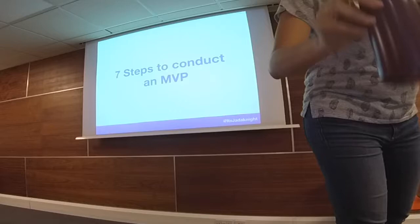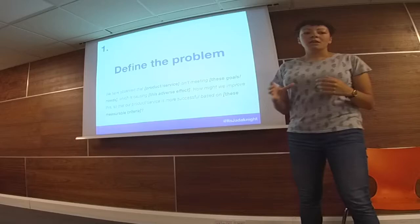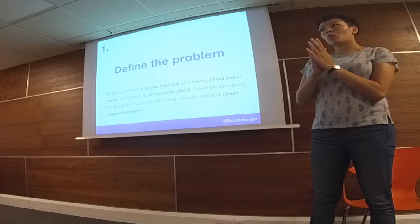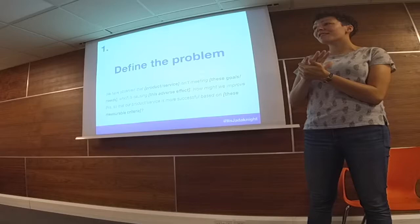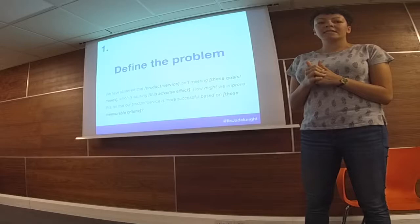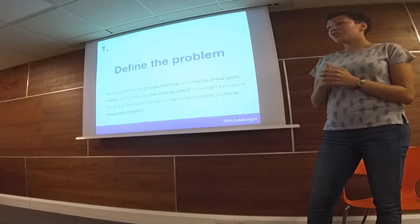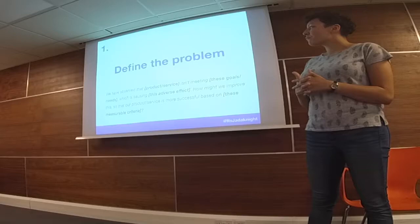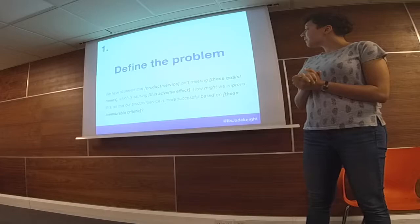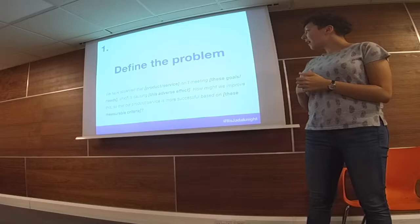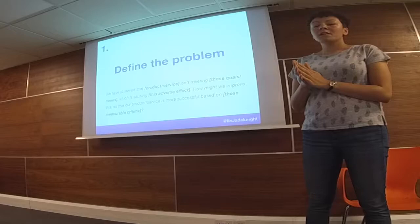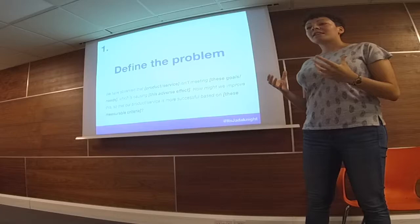Step one is really simple: define the problem. It's the most important step at the beginning of any project or MVP. You want to understand what the problem is you're trying to solve, why it is a problem, have you tried to tackle this before and it didn't work, and what has sparked this whole process in the first place. It could be something like your customers aren't staying with you — you're losing retention and you're not sure why. At this stage it's really good to write a problem statement. Here's a small template: 'We've observed that this product or service isn't meeting these goals or needs, which is causing this adverse effect. How might we improve this so that our product or service is more successful based on these measurable criteria?' These statements are really the best way to get stakeholders invested in what you're trying to do.